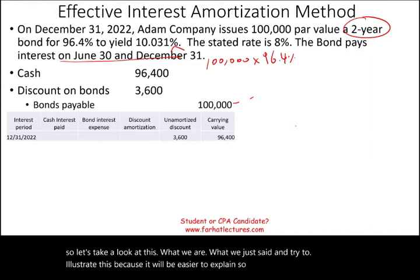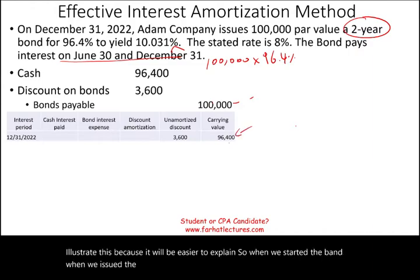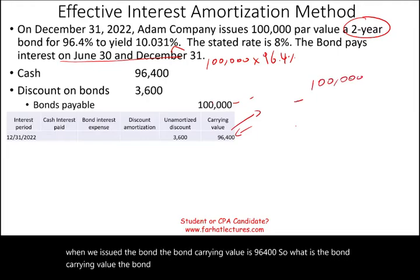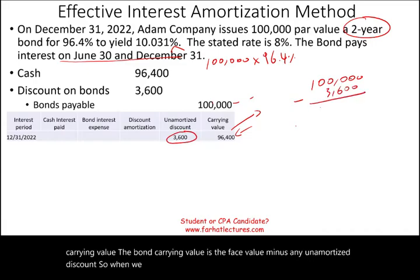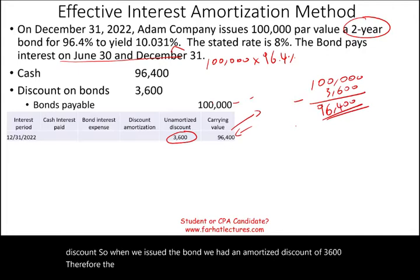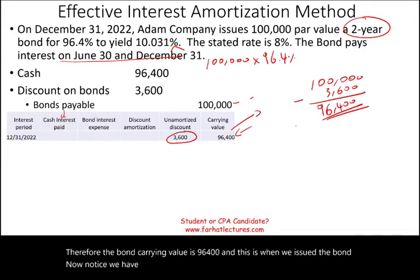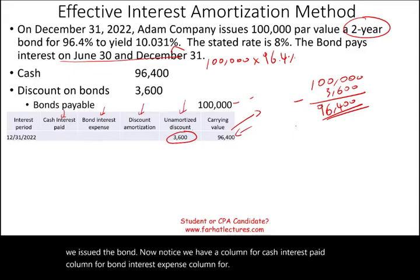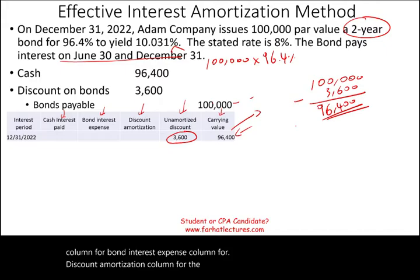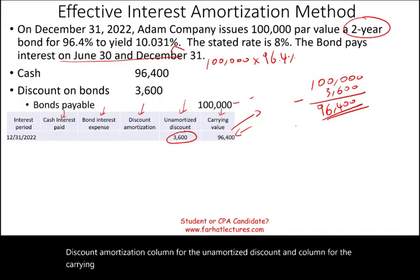When we issued the bond, the bond carrying value is $96,400. The bond carrying value is the face value minus any unamortized discount. When we issued the bond, we had an unamortized discount of $3,600. Therefore, the bond carrying value is $96,400. The amortization table has columns for cash interest paid, bond interest expense, discount amortization, unamortized discount, and carrying value.